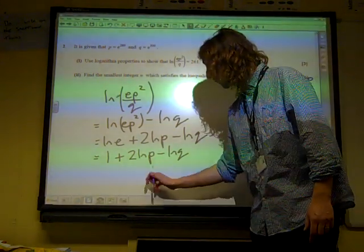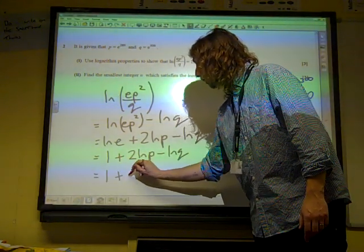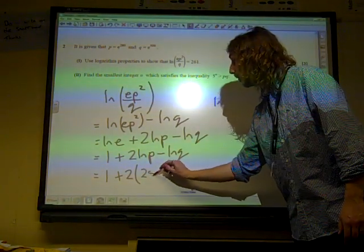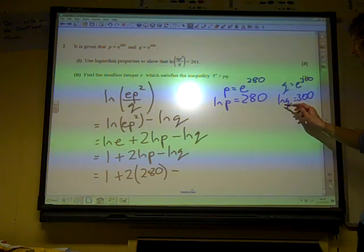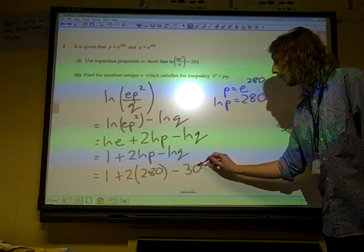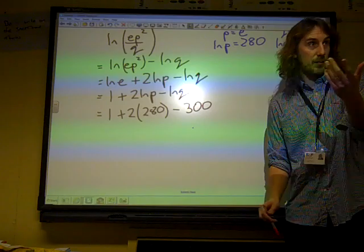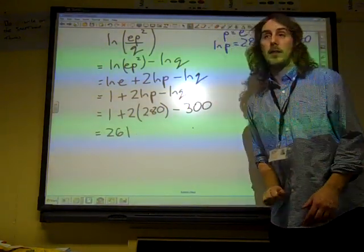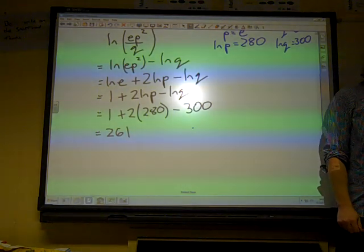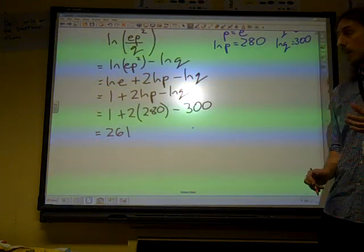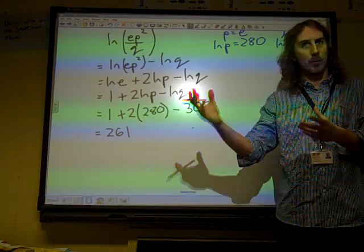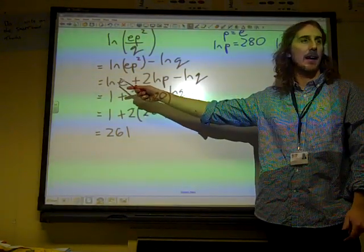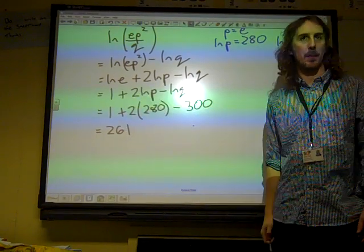And this becomes 1 plus twice natural log of P, which is 280, minus the natural log of Q, which is 300. And if we finish that, that is 261. There were a few people who came up with 260 and then tried to pretend it was 261. Somewhere along the line, they've lost the ln E. And it's noticeable that a few people have done that.